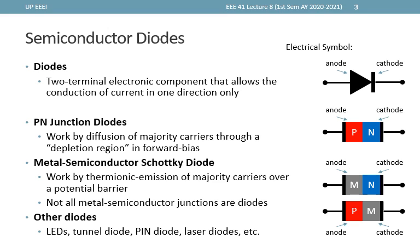We also have other diodes, which include LEDs, tunnel diodes, PIN diodes (where I stands for intrinsic), laser diodes, and so on. Some of these are still made of semiconductor materials but with special characteristics and dimensions. For this lecture, we'll focus only on the PN junction diode.